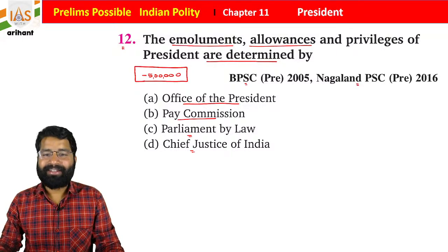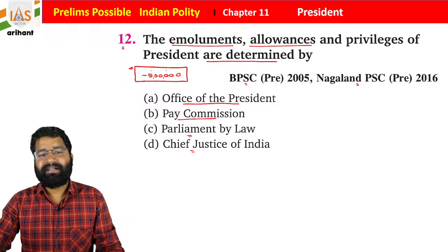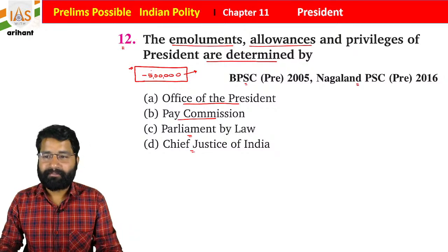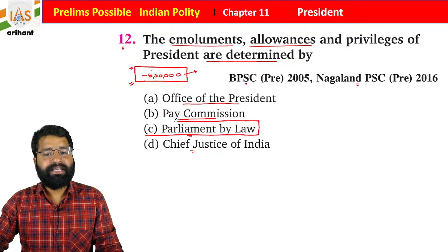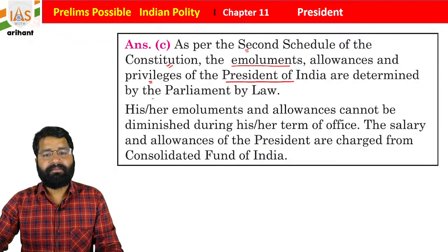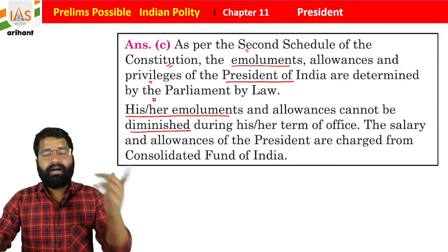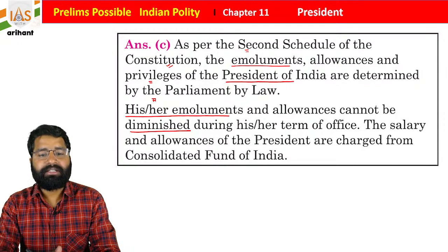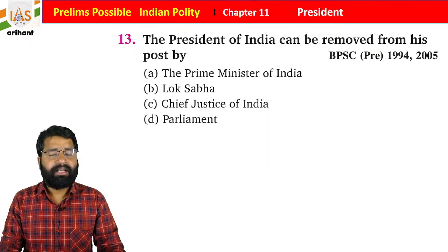Regarding privileges: the President currently earns five lakh rupees per month with tax exemption, lives in the President's House (Rashtrapati Bhavan), and receives free food and other privileges. As per the Second Schedule of the Constitution, the emoluments, allowances, and privileges of the President are determined by Parliament by law. These emoluments and allowances cannot be diminished during the term of office, and the salary is charged from the Consolidated Fund of India.